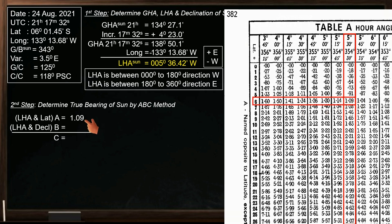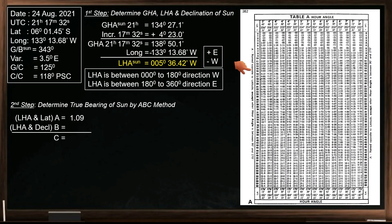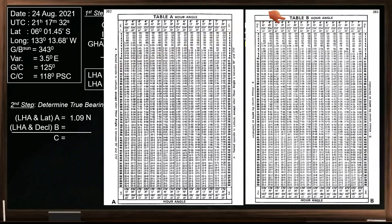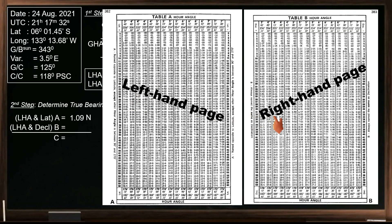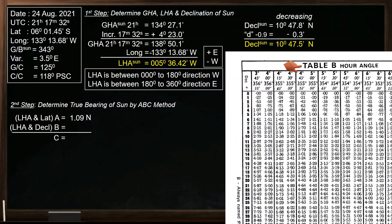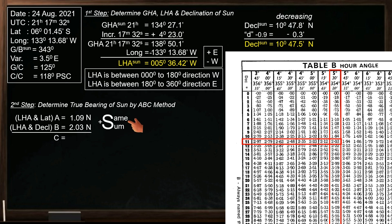To determine the direction, the rule is written on the sides of every page: named opposite to latitude, except when the hour angle is between 90 and 270 degrees. So the direction is north. For table B, it is just beside table A — table A is on the left-hand page, while table B is on the right-hand page. To find the value of B, we need LHA and declination. The nearest hour angle is 5 degrees 30 minutes, and the nearest declination is 11 degrees. The value of B is 2.03. B is always named the same as the declination. Since both A and B have the same name, we add them to find C. The value of C is 3.12.